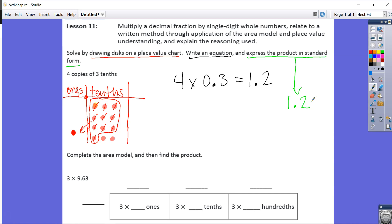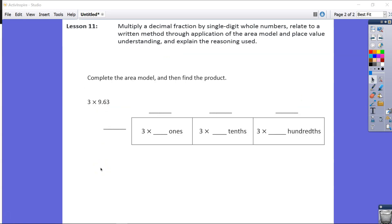Next, they're asking us to complete the area model and then find the product, so let's go ahead and flip a new page here, and we have 3 times 9 and 6,300ths. We know when we're making our area model, I'm just going to add a few things here that they don't have that I like to have in my area model.